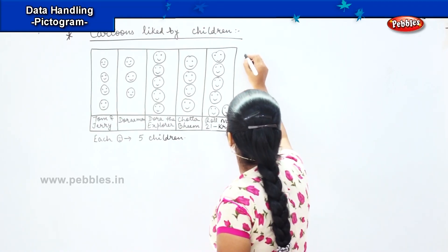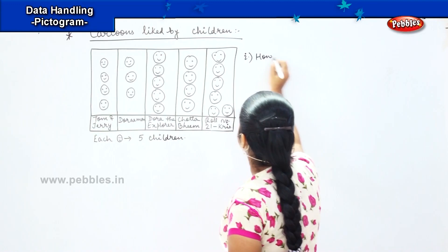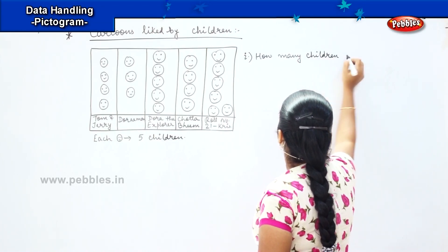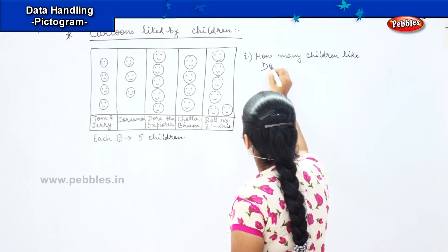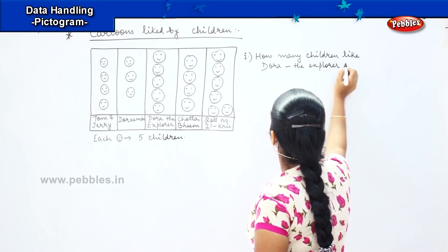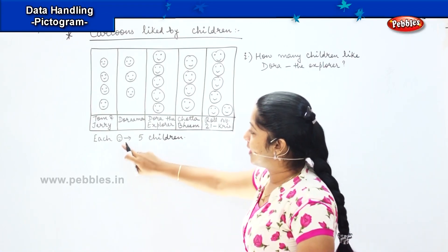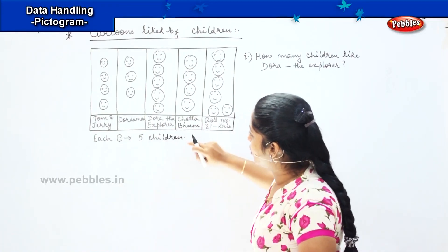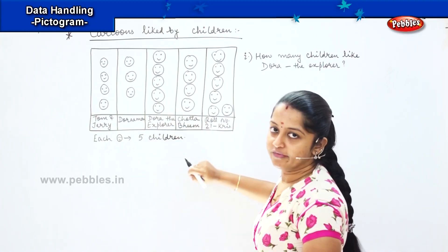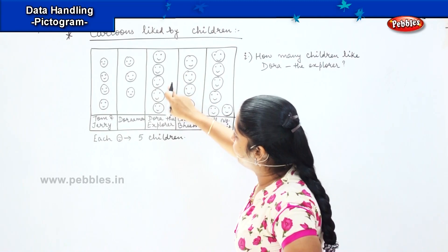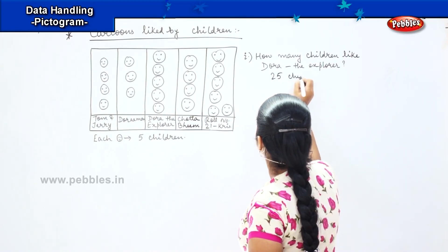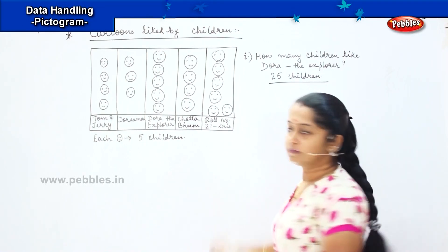Here is your first question: how many children like Dora the Explorer? Each smiley represents five children. Dora has how many smileys? One, two, three, four and five. So we need to multiply five with five — that is five, ten, fifteen, twenty and twenty-five. So twenty-five children like Dora the Explorer.